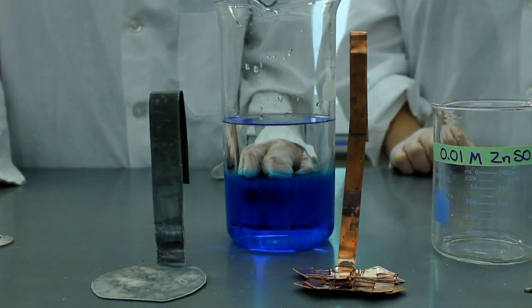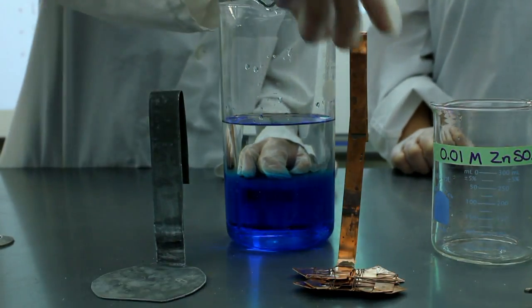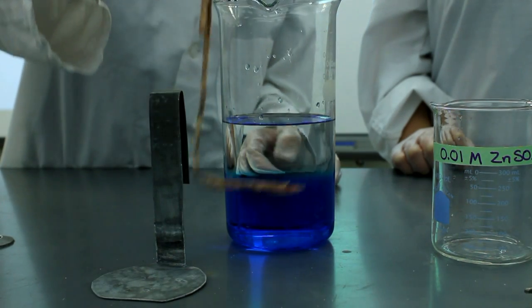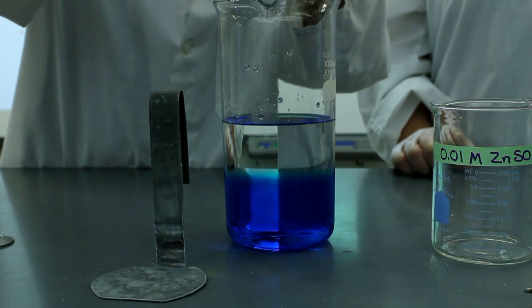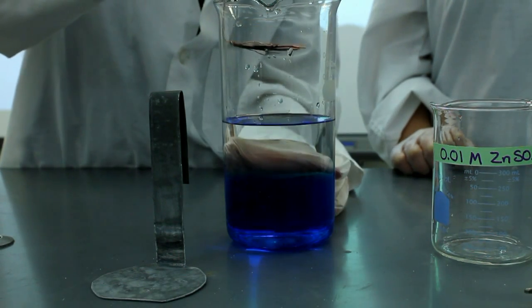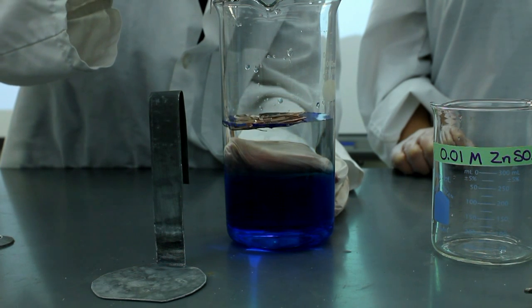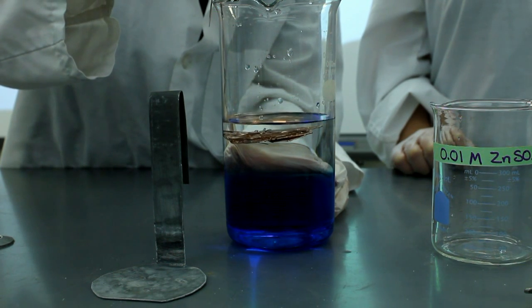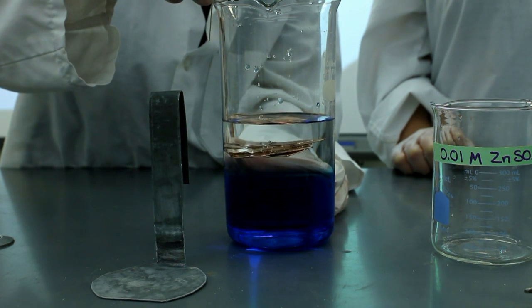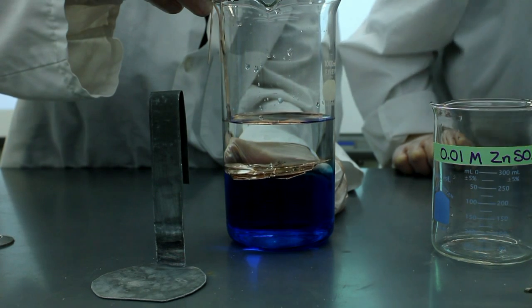The next step after both solutions are added is to insert both electrodes. This copper electrode was created by wrapping sheets of copper around itself. It must be inserted slowly to prevent mixing as we did before with the copper solution.